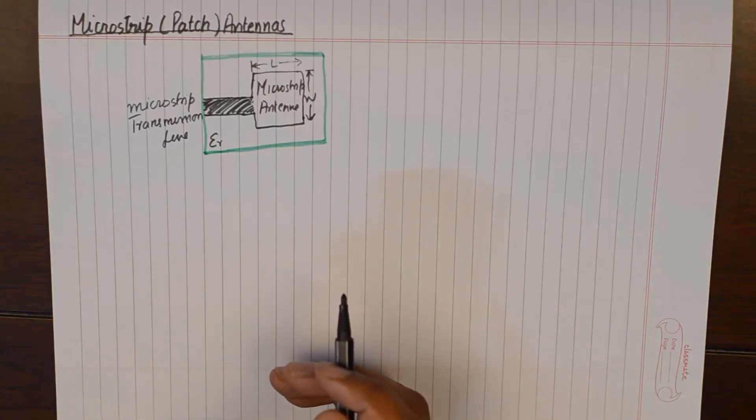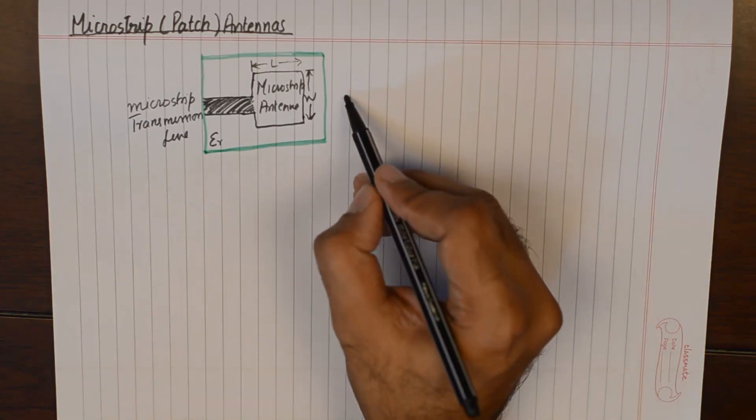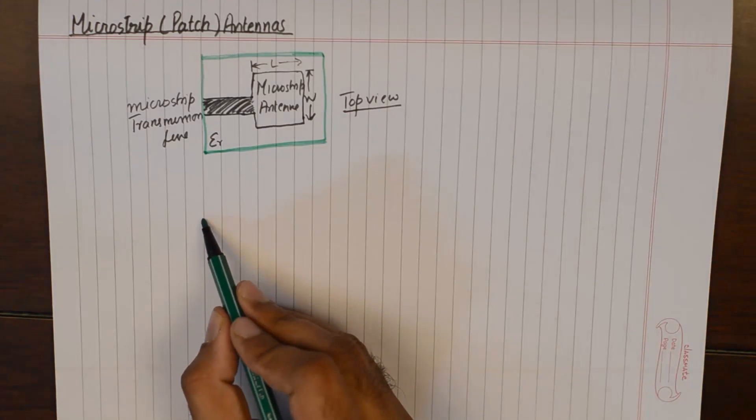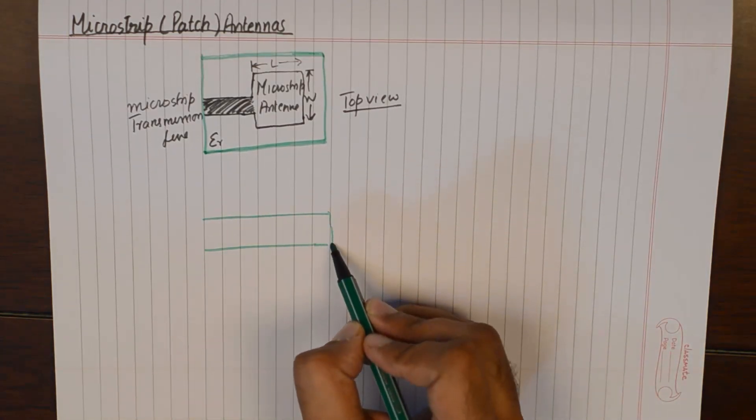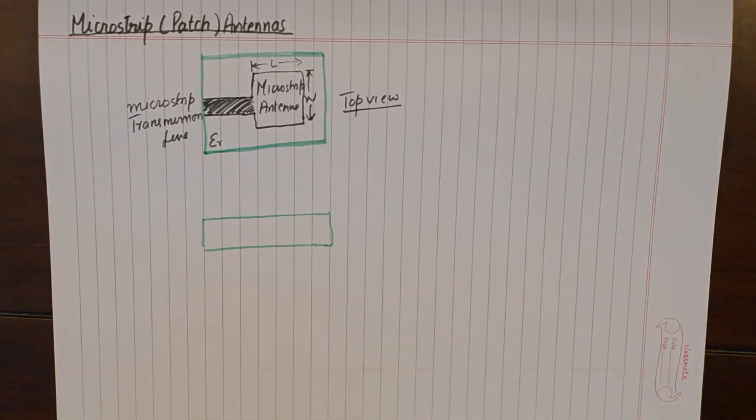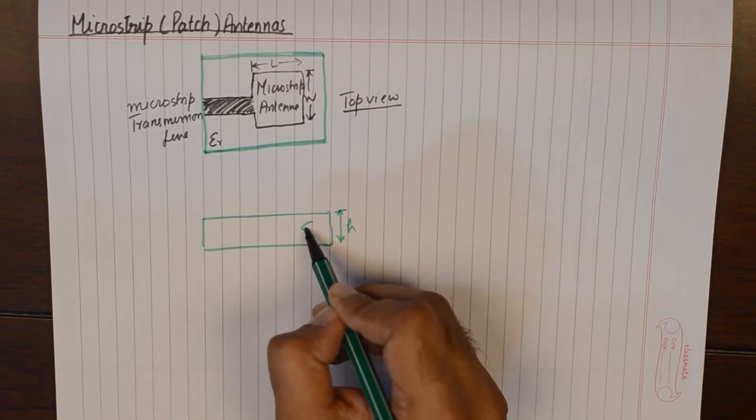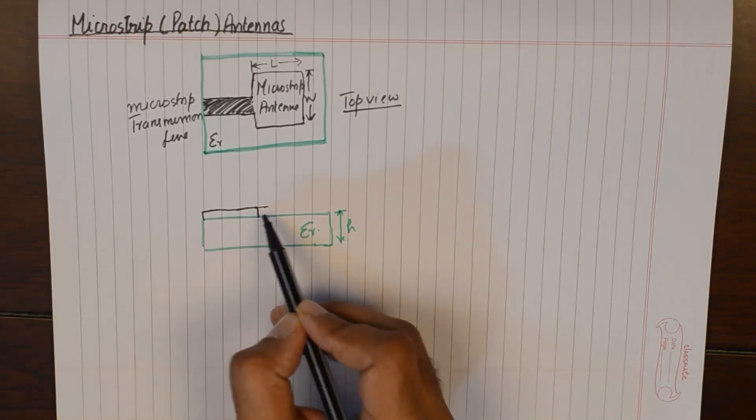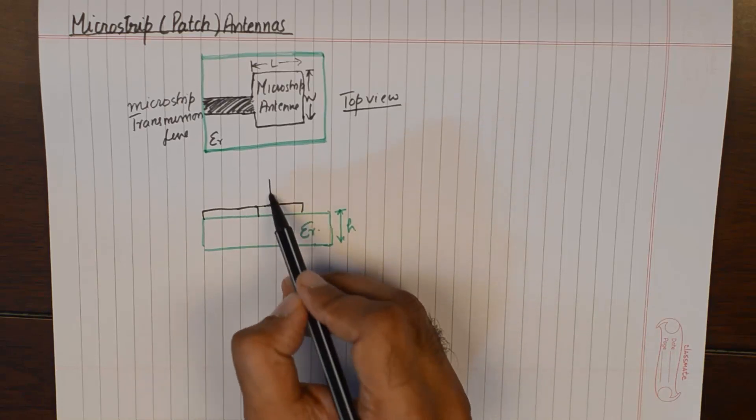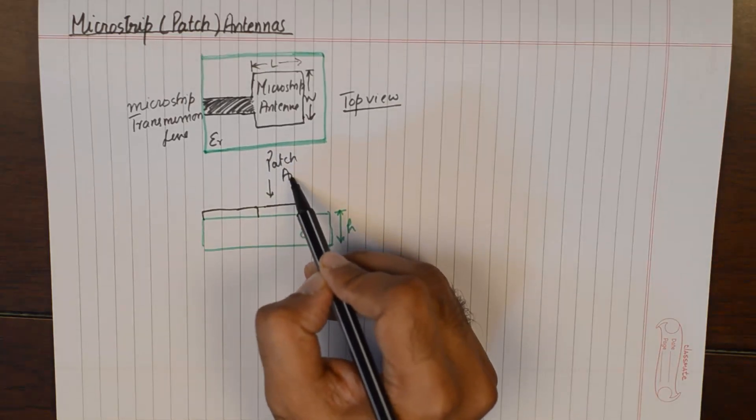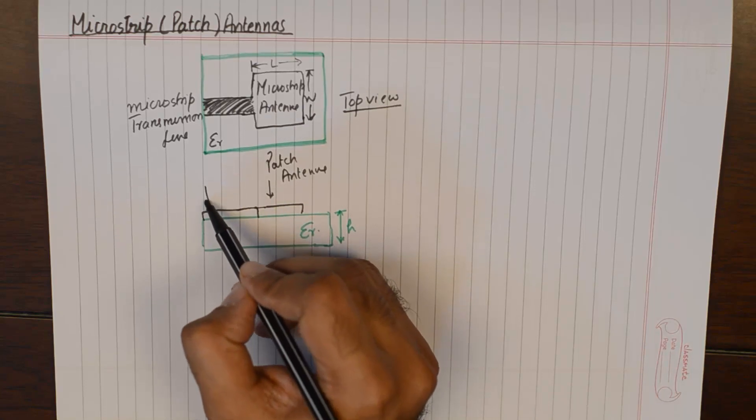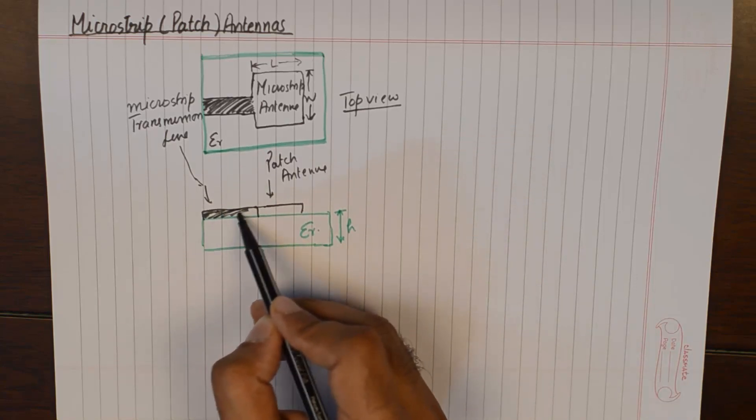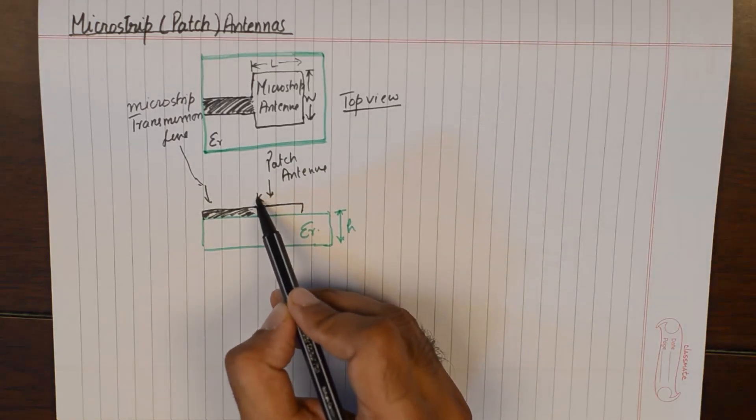Now this is the top view of a microstrip antenna. If we were to make the side view, that will look something like this. You could see the deposit here, this will be the patch antenna, this will be the microstrip transmission line.